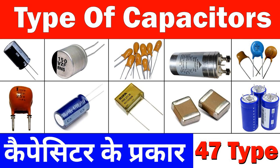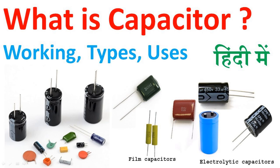Capacitors contribute to voltage regulation in electronic circuits by helping to stabilize and maintain a consistent voltage level, especially in the presence of varying loads or rapid changes in current demand. Smoothing voltage fluctuations: Capacitors, particularly large electrolytic capacitors, are often employed in power supply circuits. As electronic devices draw varying amounts of current, the voltage across the power supply terminals can fluctuate. Capacitors act as energy reservoirs, smoothing out these fluctuations by storing charge during periods of excess current and releasing it when the demand increases.